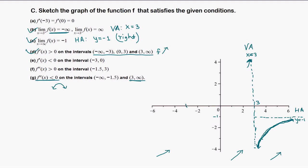Now the first derivative is less than 0, meaning the function is decreasing on (-3, 0). So we have increasing then decreasing, which means we have a local maximum at negative 3. The derivative at negative 3 equals 0 confirms it's a critical number, and we have a local maximum there — going up then down.